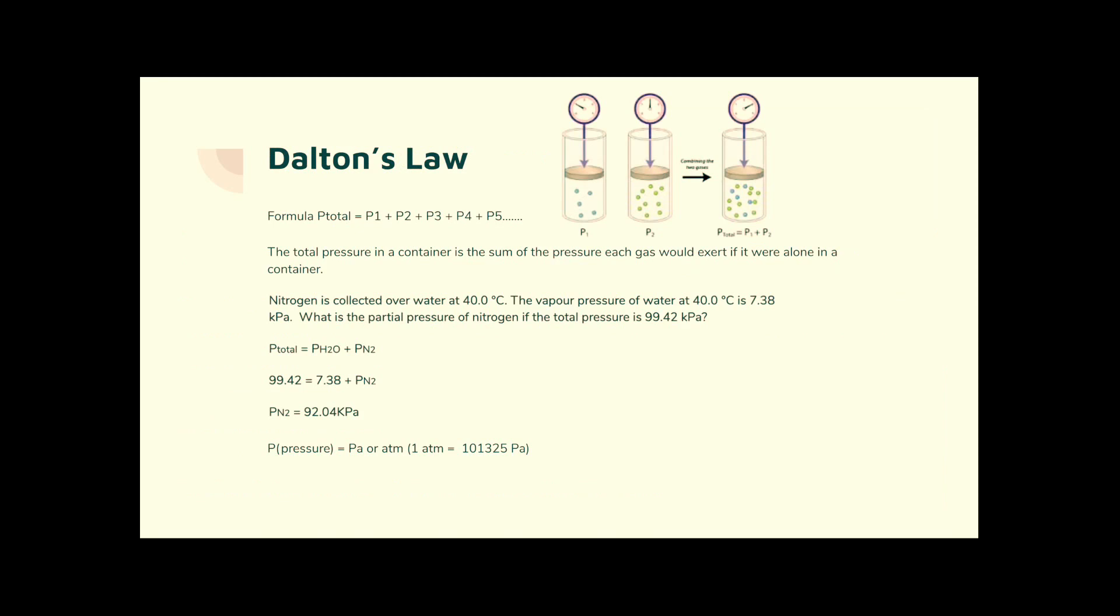Dalton's law, not particularly on the IB. They don't mention it. But it is one of the gas laws, so we'll include it. All it's saying is the total pressure is the sum of the individual pressures above the liquid. So nitrogen is collected over water at 40 degrees C, so we have to keep the other variables constant. Remember that? That's a theme through this little presentation. The vapor pressure of water at 40 degrees C is 7.38. What's the partial pressure of nitrogen when the total pressure is 99.42? Well, the total is the sum of the individuals, so it's just simple arithmetic. The pressure of the nitrogen must be 92.04 kilopascals.